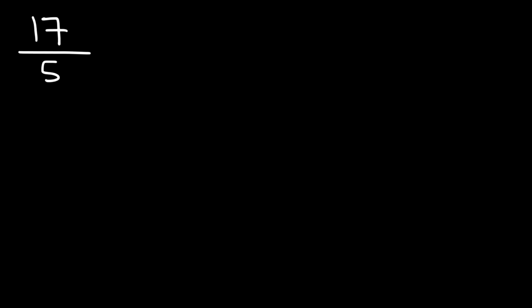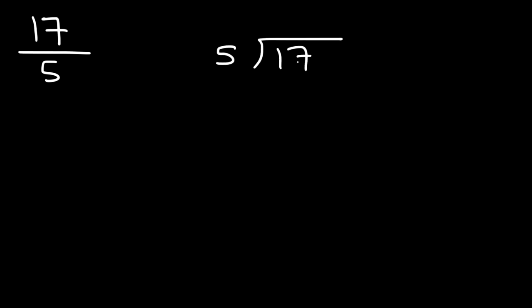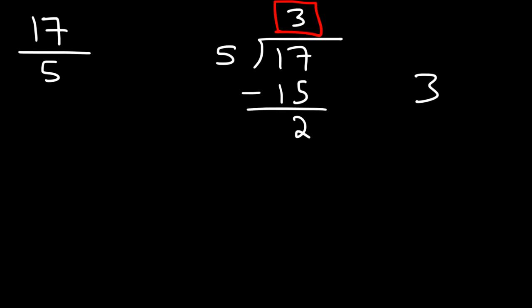Now you need to know how to go backwards — how to convert an improper fraction back into a mixed number. Let's take the first example: seventeen over five, and show that it equals three and two-fifths. One technique is long division. How many times does five go into seventeen? Five goes into seventeen three times; five times three is fifteen, and seventeen minus fifteen is two. That quotient is the whole number of the mixed number, and the remainder becomes the numerator.